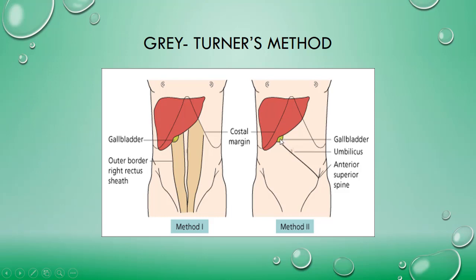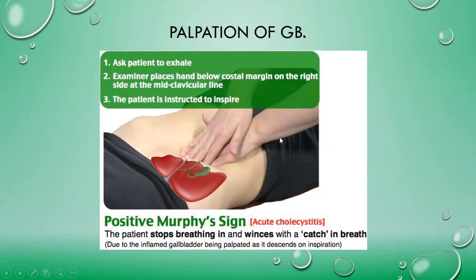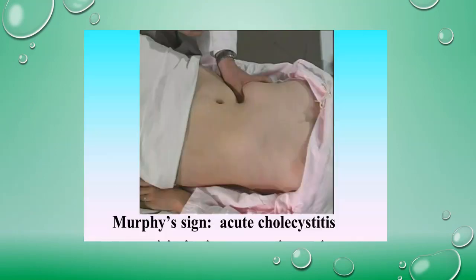One should know that the gallbladder is better seen than felt when enlarged. To begin palpation, stand on the patient's right side, help position the patient, and ask whether they feel any pain before starting. Begin with superficial examination, move in a systematic manner through the abdominal quadrants, then repeat palpation deeply.